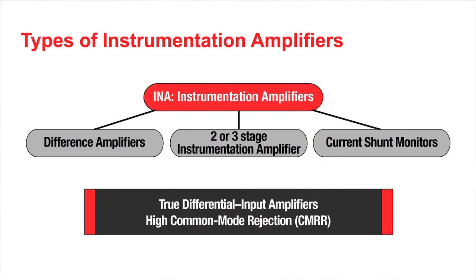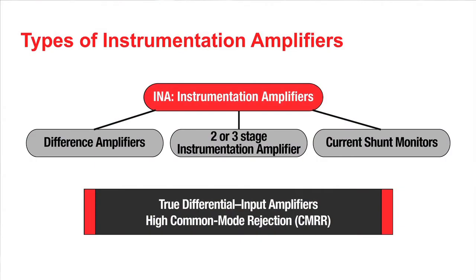The term instrumentation amplifier is properly used to describe a category of true differential input amplifiers that emphasize high common mode rejection and accuracy. More commonly, the term instrumentation amplifier is not used in such a broad way, and instead the wide category of instrumentation amplifiers, or IAs, is broken up into three more specific categories: two- or three-stage instrumentation amplifiers, difference amplifiers, and current shunt monitors.